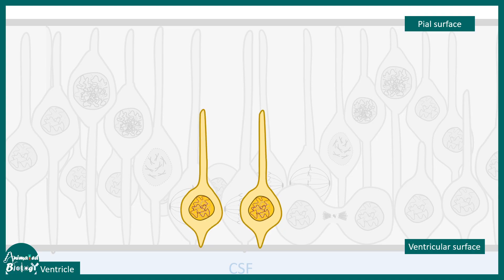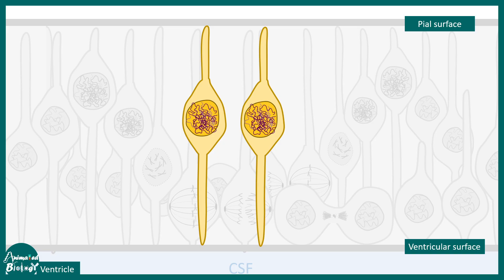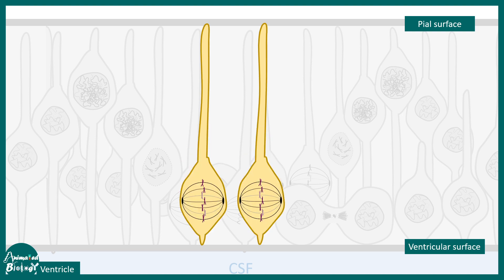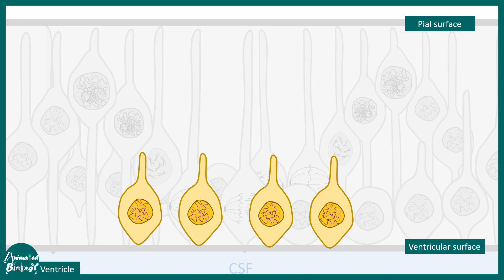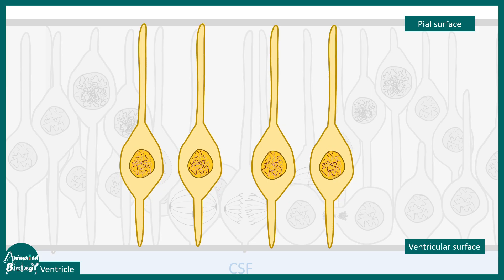These radial glial progenitors born from the mother cell now extend their processes towards the pial surface. The same division process repeats — the cell bodies are moving towards the ventricular surface, M phase happens when they touch the ventricular surface, and they divide to give rise to other daughter cells. This is how the overall process of self-renewal division takes place in the initial time point of nervous system development.